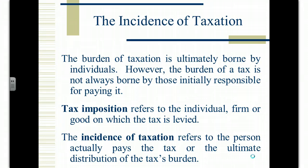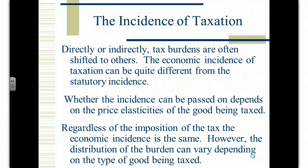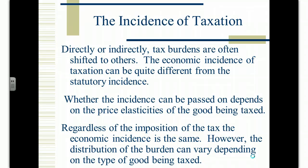Tax imposition refers to the individual, firm, or good on which the tax is levied. The incidence of taxation, which is more important, refers to the person who actually pays the tax — the ultimate distribution of the tax's burden. Directly or indirectly, tax burdens are often shifted to others. The economic incidence of taxation can be quite different from the statutory or legal incidence. The legal incidence is who must give the money to the Revenue Commissioners; the economic incidence is who actually bears the cost. Whether incidence can be passed on depends on the price elasticities of the good being taxed — and regardless of where the tax is imposed, the economic incidence outcome will be the same, so you should impose the tax where it's easiest to collect.